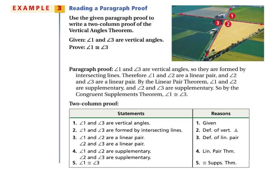Back to the paragraph proof: therefore angle one and angle two are a linear pair, and angle two and angle three are a linear pair — step three, justified by definition of a linear pair. By the linear pair theorem, angle one and angle two are supplementary, and angle two and angle three are supplementary. The definition of a linear pair says if two angles form a linear pair, then they are supplementary.